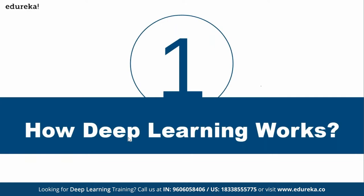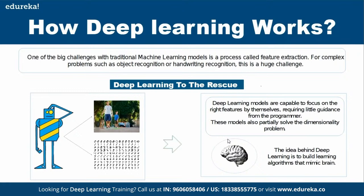How deep learning works: it works like your brain where you have multiple neuron cells. In computer programs, each neuron is nothing but a mathematical function. Why use deep learning instead of machine learning? Deep learning is very good at feature extraction compared to your machine learning algorithms, which is always a challenge in ML models.